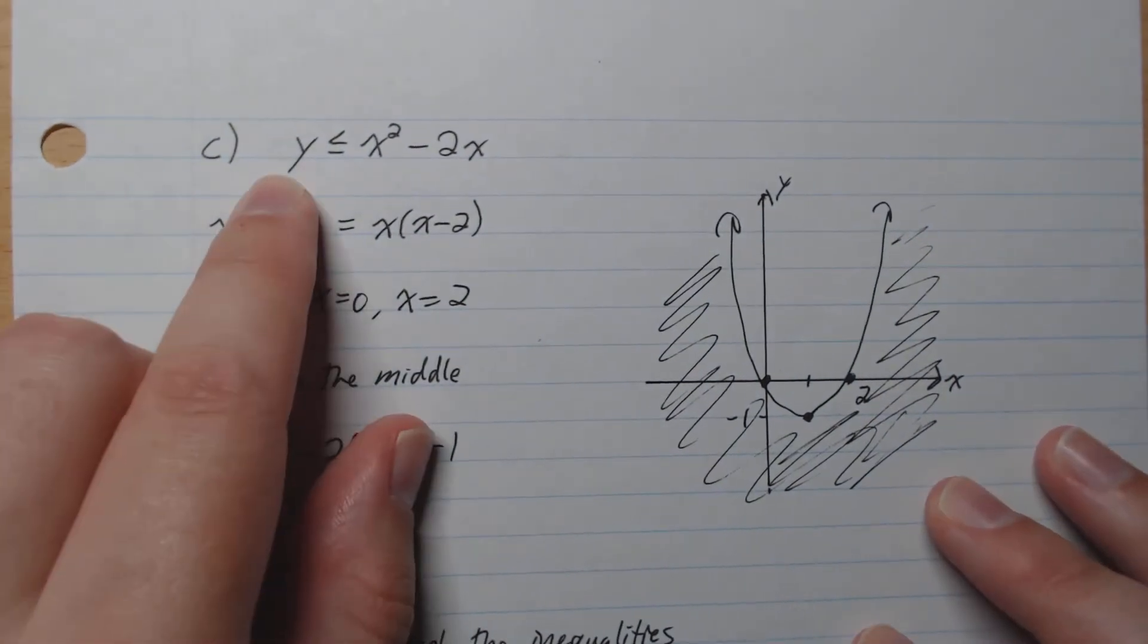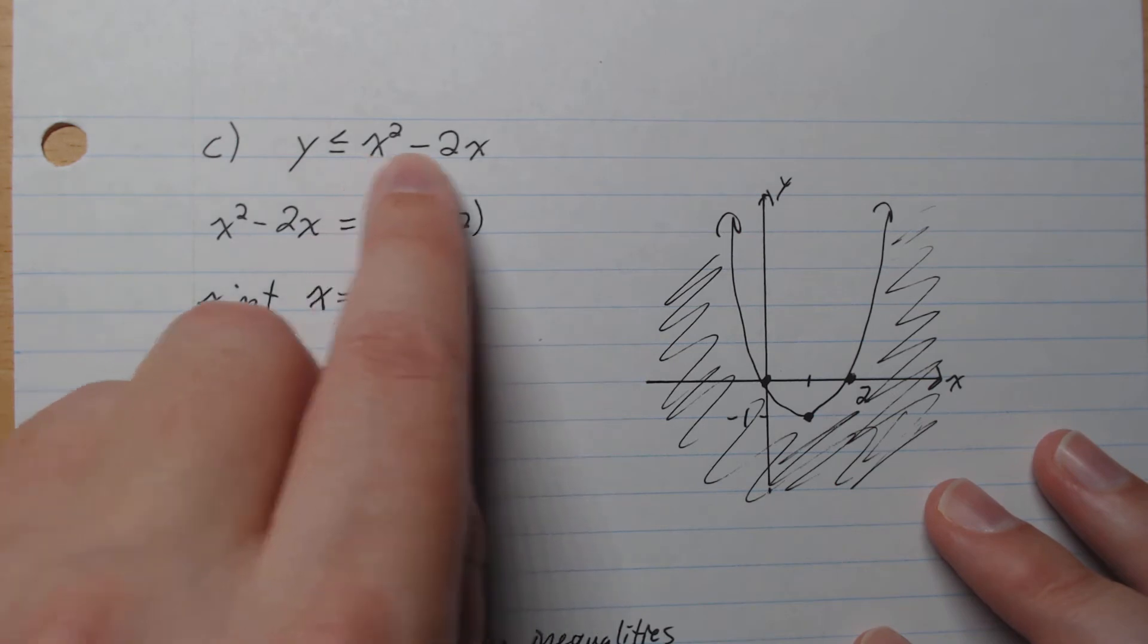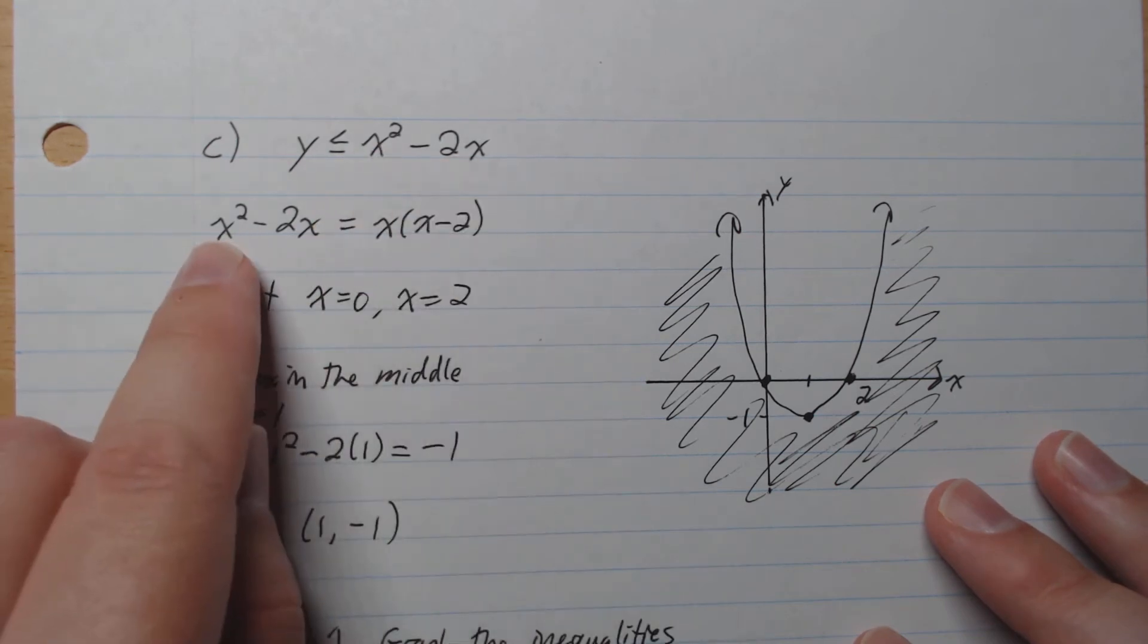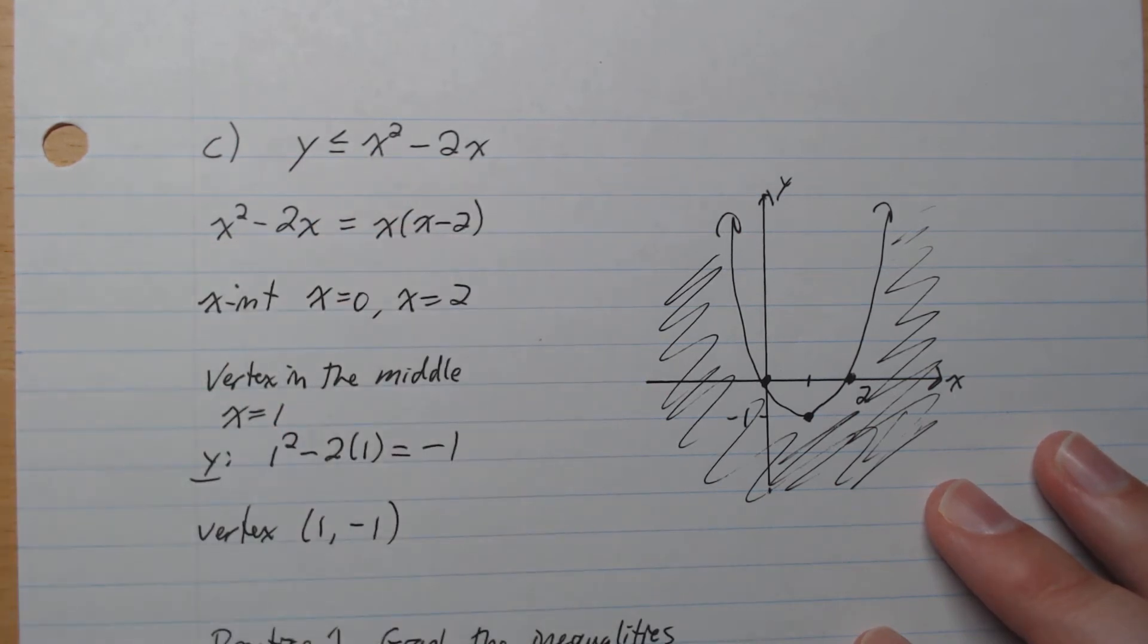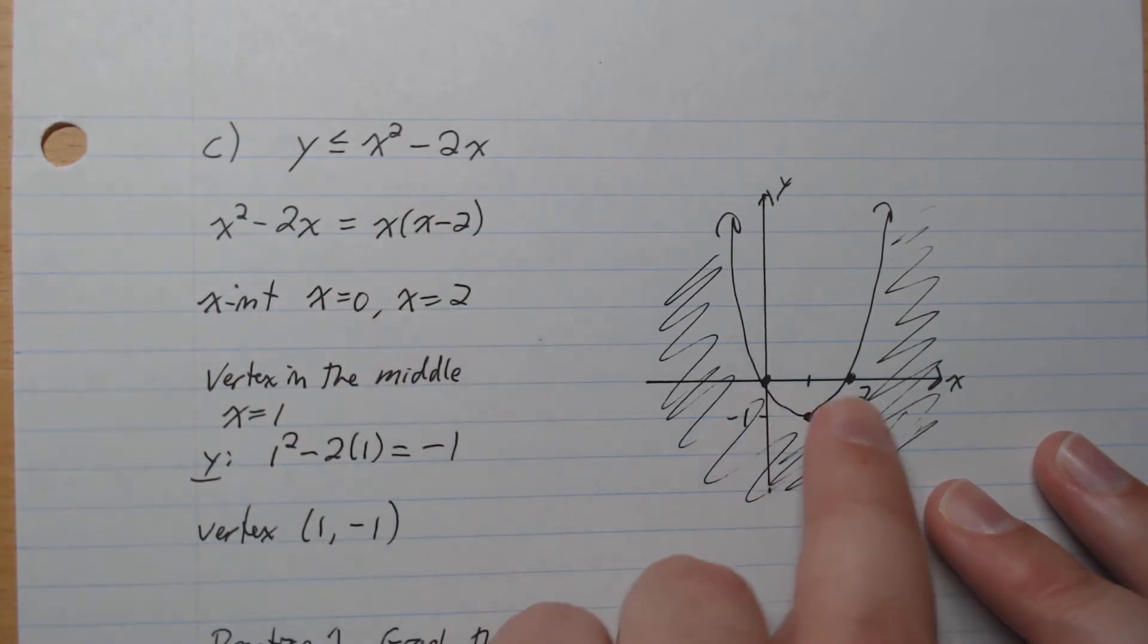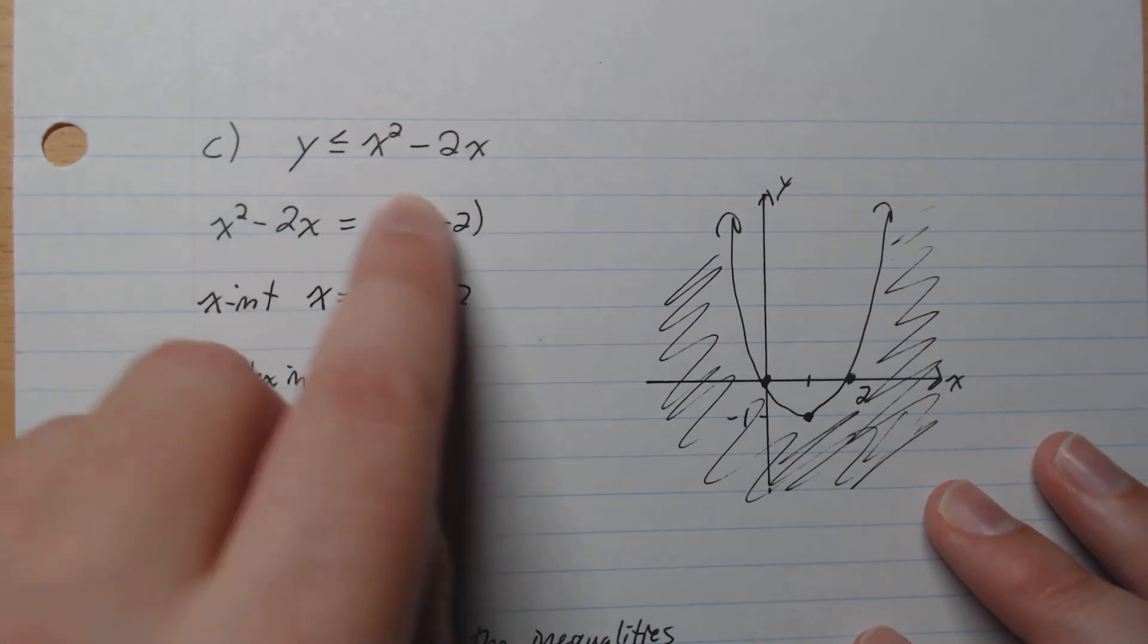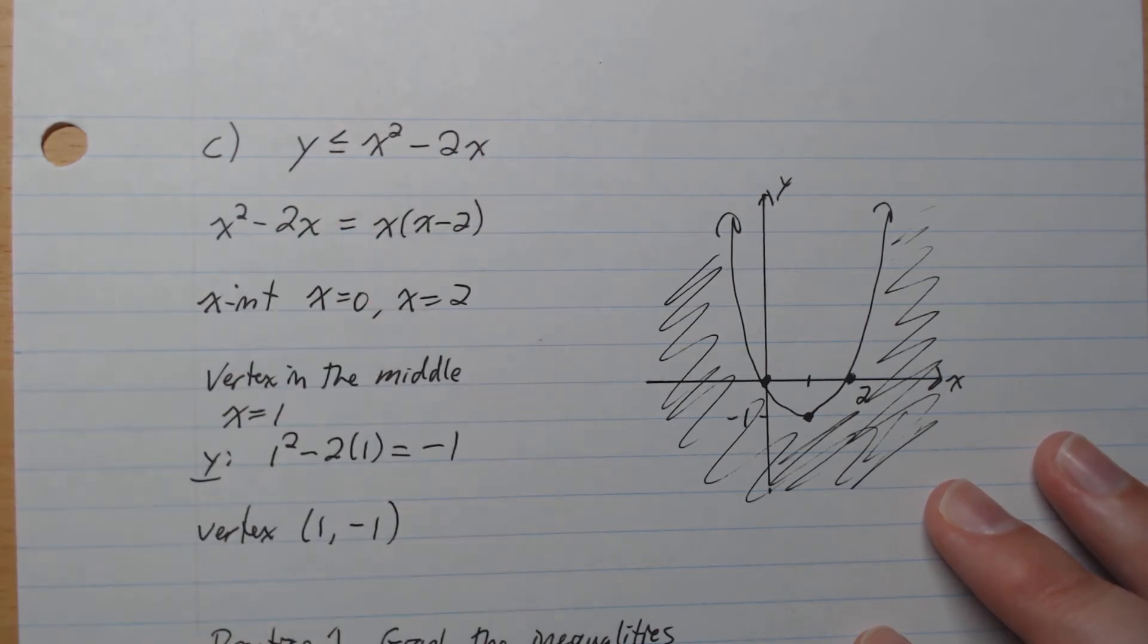C, y is less or equal to x squared minus 2x. So we can factor x squared minus 2x. There's x in common like that. So when is it equal to zero? It's equal to zero at x equals zero and x equals two, like that. So these are the two points there. The vertex occurs in the middle, so that's x equals one. If we plug in x equals one into our function, we get negative one. And so our vertex is one comma negative one. So we update that there.